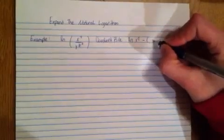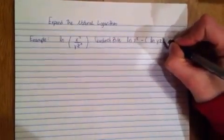and since we divide, we're going to subtract them. So it's the natural log of x squared minus the natural log of yz to the third.